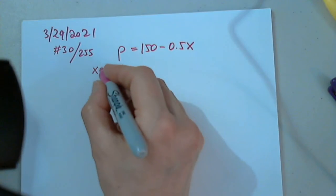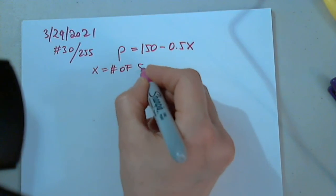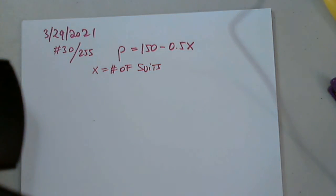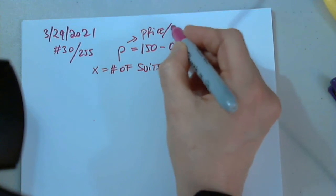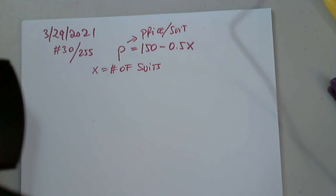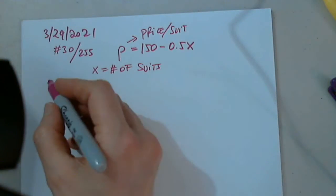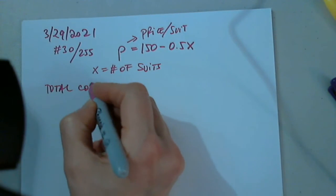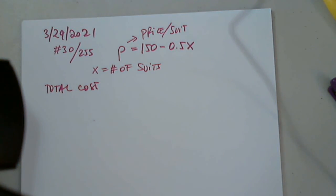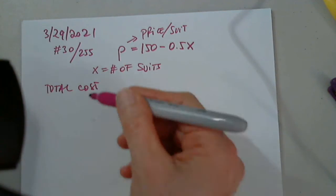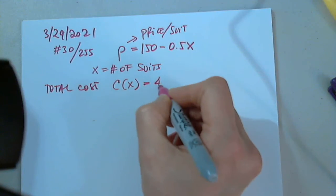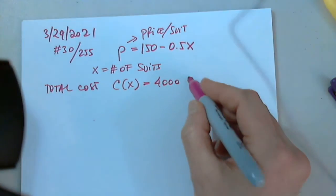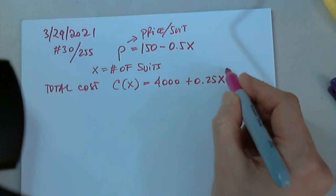So, X is the number of suits, and P is the price per suit, price per suit. Okay, it also determines that the total cost, total cost of producing X suits is given by the function C of X equals 4,000 plus 0.25X squared.